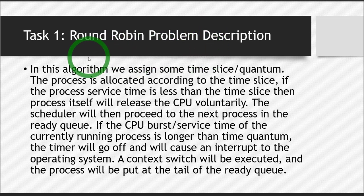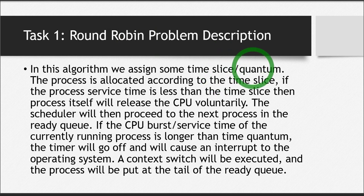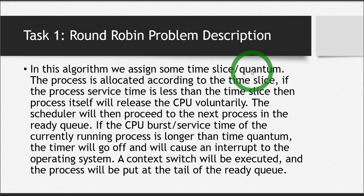Let's say every process is given two units of time to execute. That specific amount of time is known as a time quantum or time slot, and it is not fixed — it can be two units of time, three, or whatever. Let's now see this algorithm again in more detail.